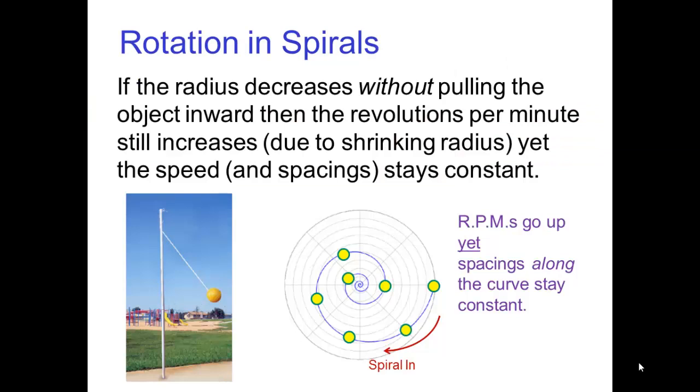The difference is that if the radius decreases without pulling the object inward, then the revolutions per minute still increase due to the shrinking radius, yet the speed and the spacings stay constant. Another way to understand this is to realize that the tether ball doesn't gain energy as it wraps around. But the best way to understand any type of motion is to watch it carefully and be observant of these kinds of details.